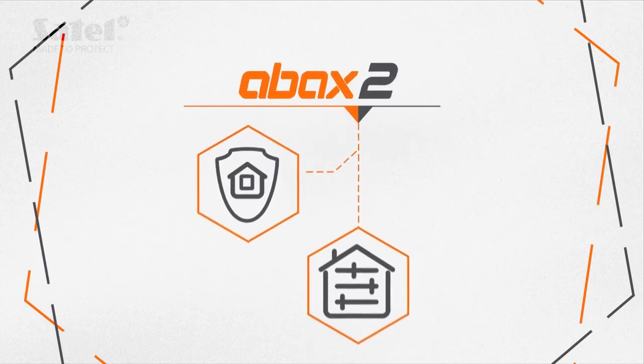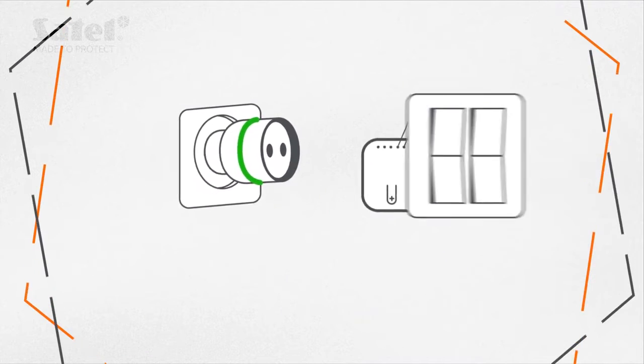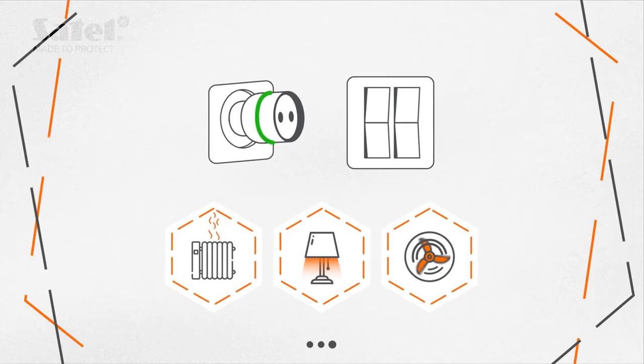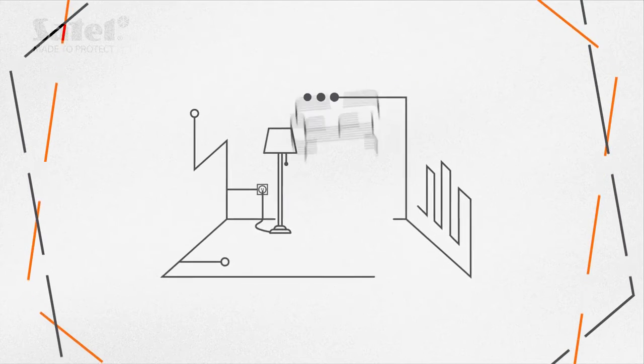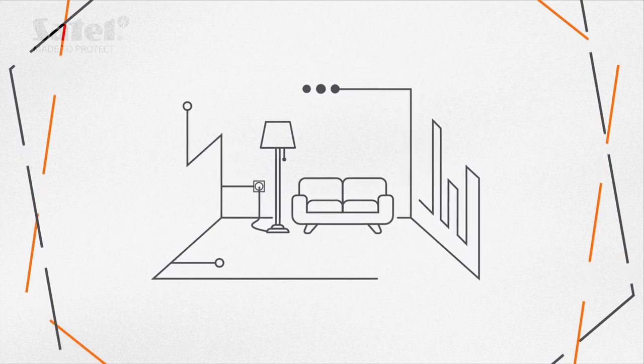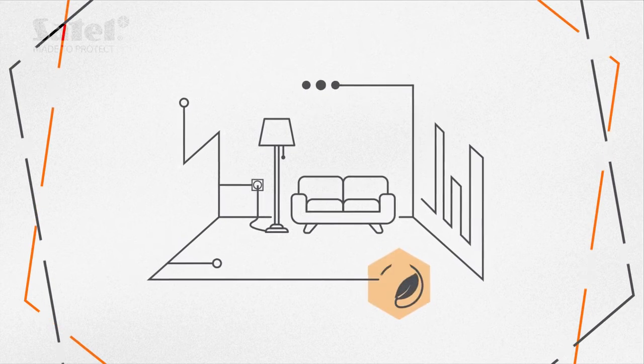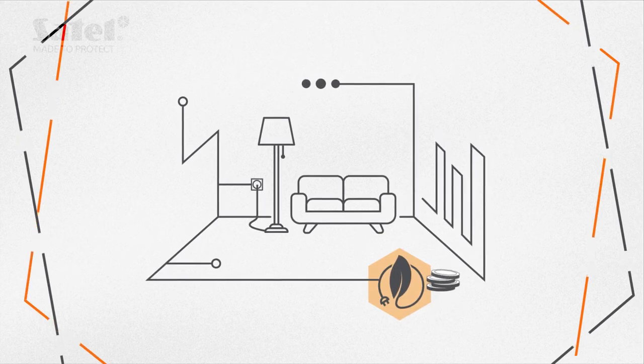ABAX2 means more than just the alarm system. Thanks to wireless controllers, it allows remote control of devices connected to the electrical system, such as home automation. It definitely improves the comfort of everyday life and at the same time saves valuable energy, protects the environment and reduces bills.